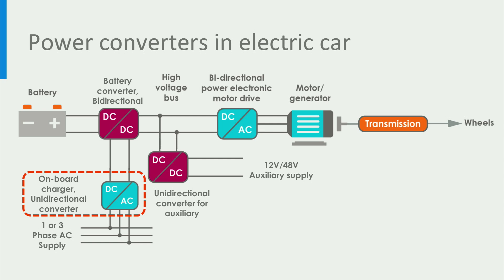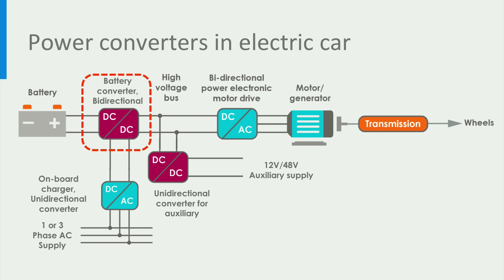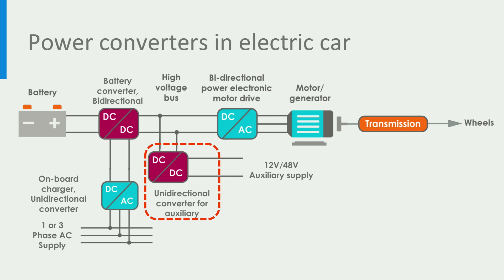The on-board charger is responsible for converting the AC power from the grid to the central DC bus for charging the traction batteries, hence it is an AC to DC power converter. The battery converter controls the charging or discharging of the traction batteries by either drawing or feeding power from the high voltage bus — hence the battery converter is a bidirectional DC to DC converter. Similarly, the auxiliary battery converter is used to charge the auxiliary battery by drawing power from the high voltage DC bus. Finally, the motor drive is a DC to AC inverter used to control and operate an AC motor.